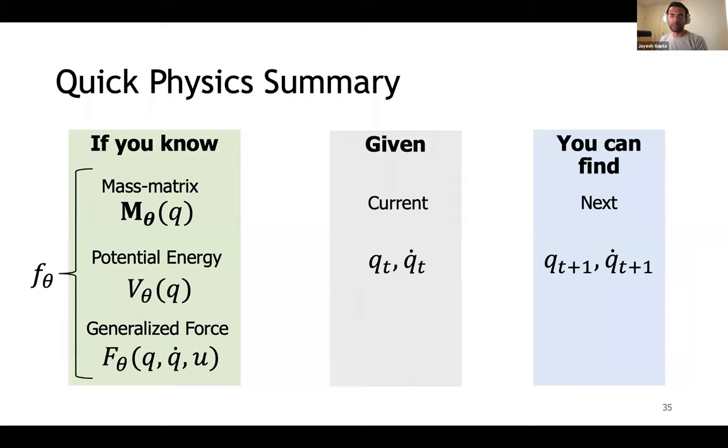The naive machine learning approach would attempt to fit a function approximator directly between the inputs and the outputs. We instead show how function approximators can be constrained by the physics priors which are governing the system. We will do so by modeling the system's mass matrix, the potential functions, and the generalized forces acting on the system. That's the structure we need to ensure in a dynamics function.